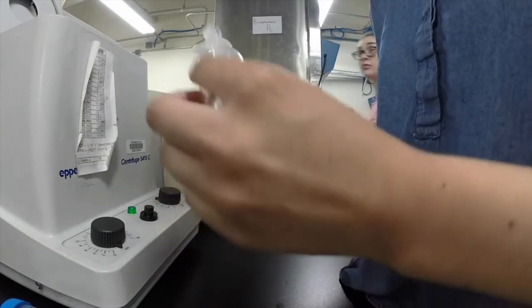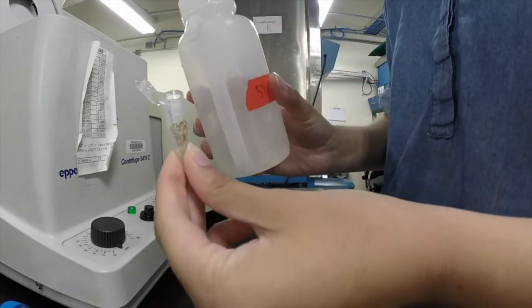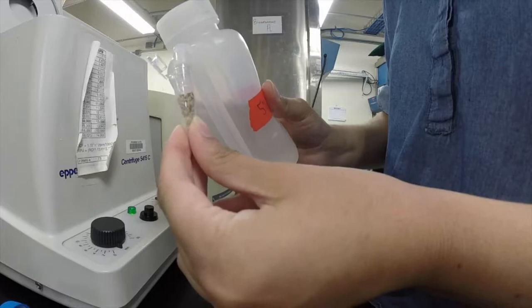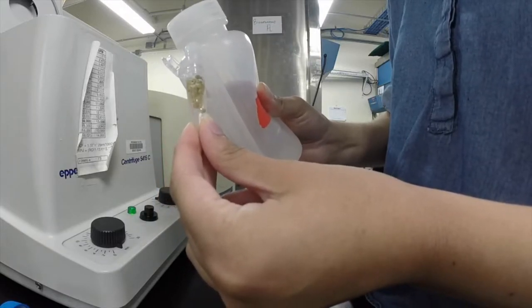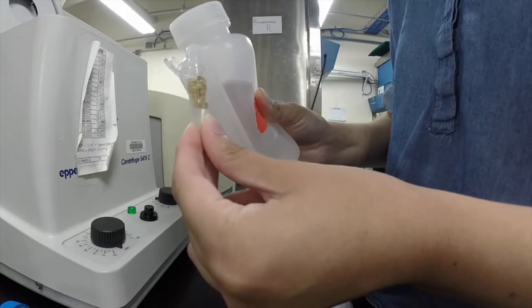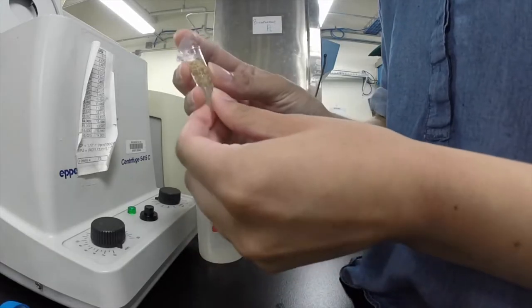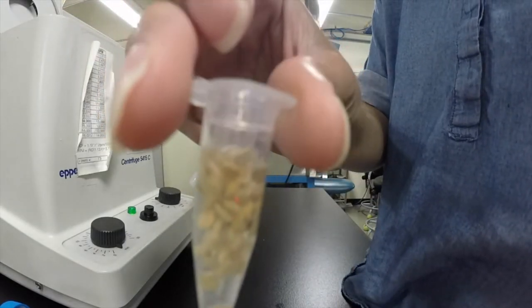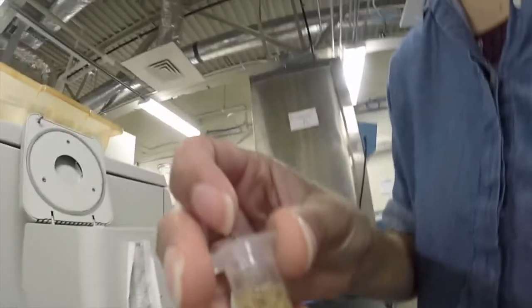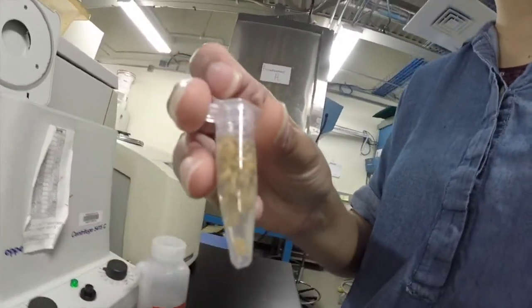And then now we're going to take our 5% bleach and just pour it until the epi tube is full and cap it. So now we have our tube containing our seeds and our bleach, and now we're going to let it sit and rotate for 20 minutes.